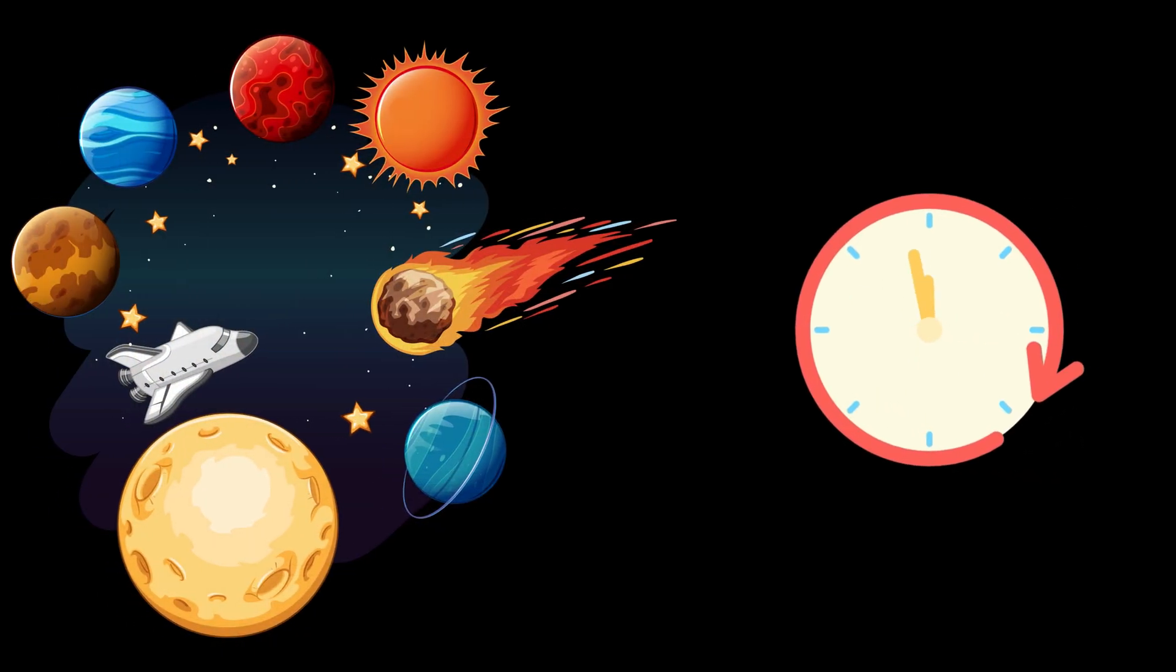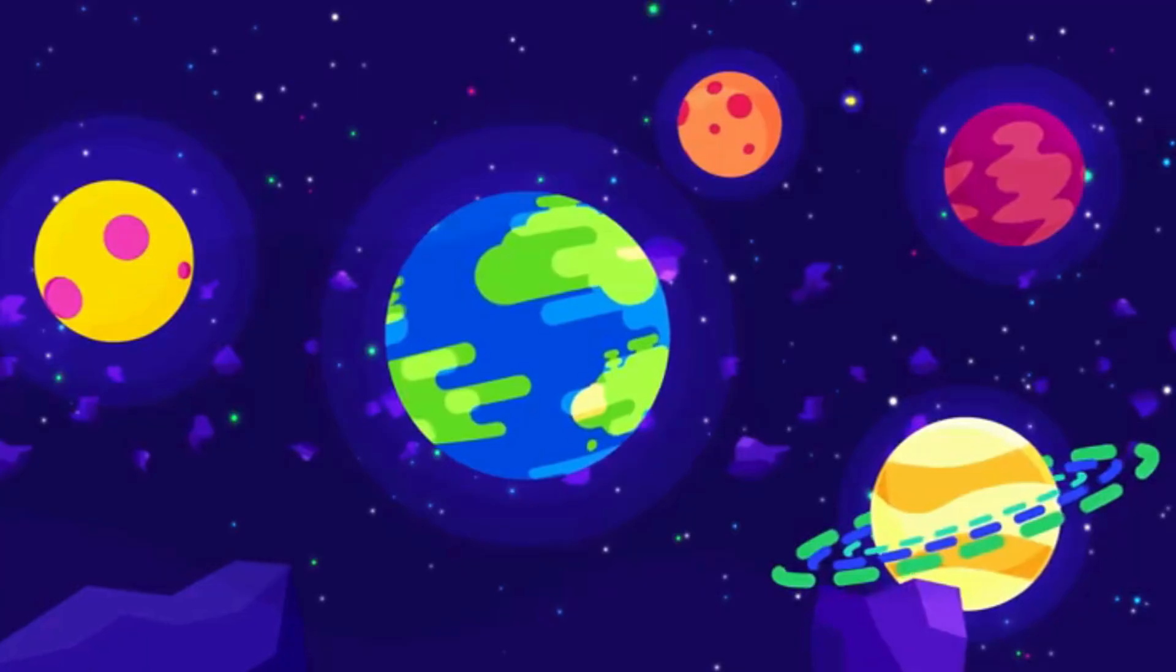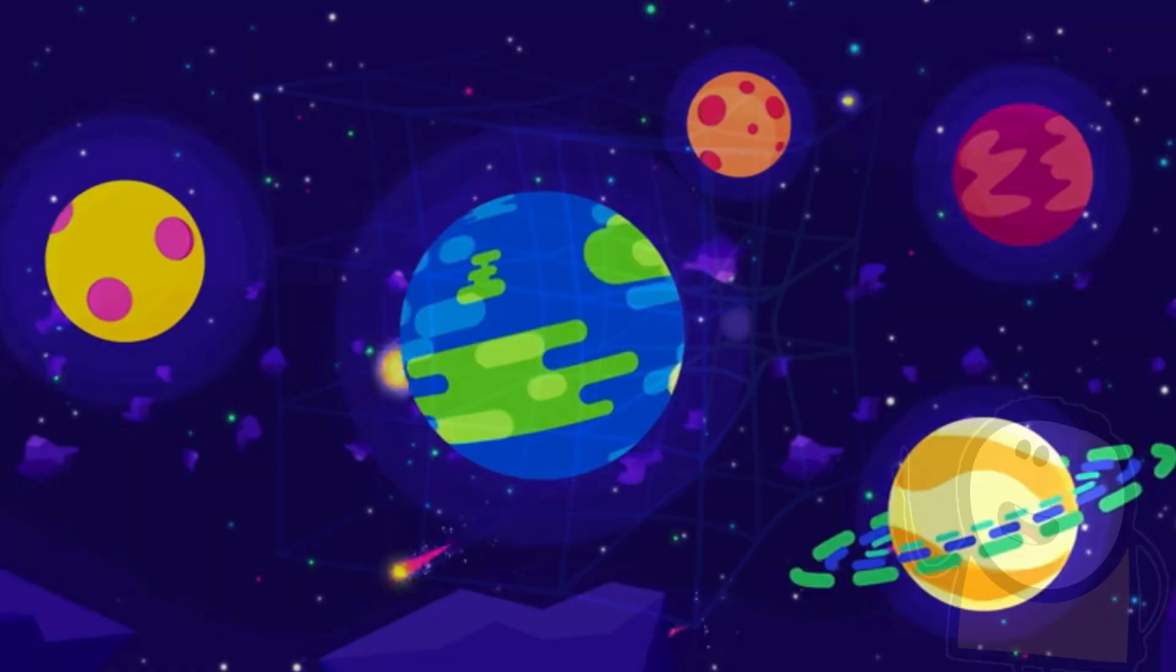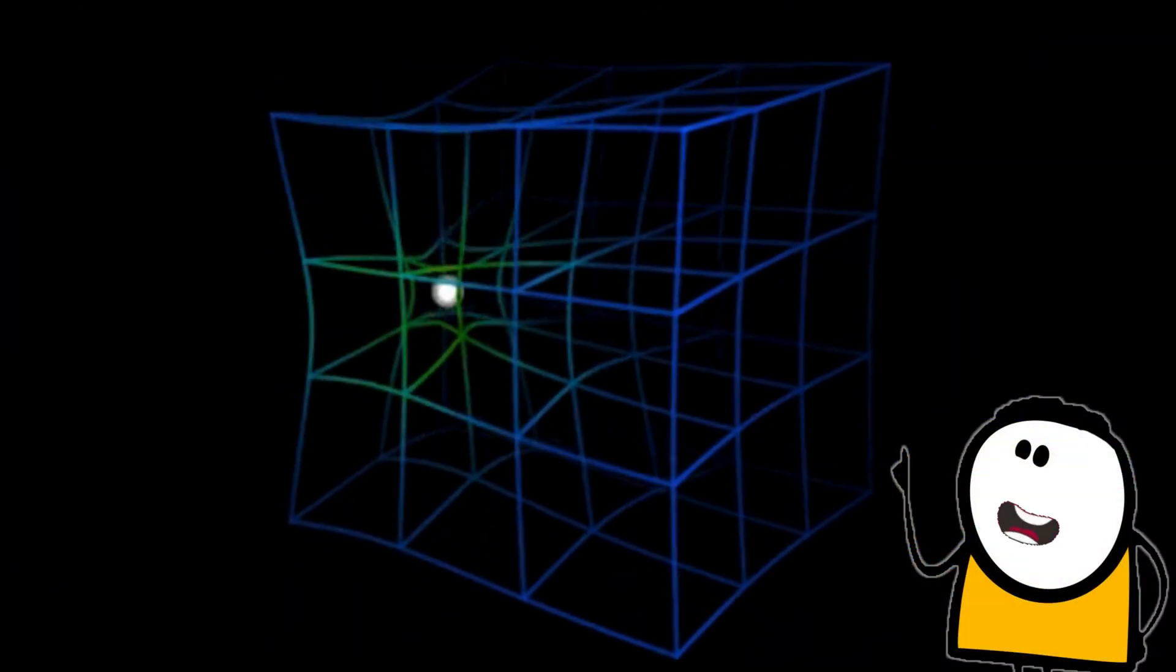Space and time aren't rigid. They're flexible, like a trampoline. Massive objects like stars or planets bend the fabric of space-time. That's how gravity works. The more massive the object, the deeper the bend.